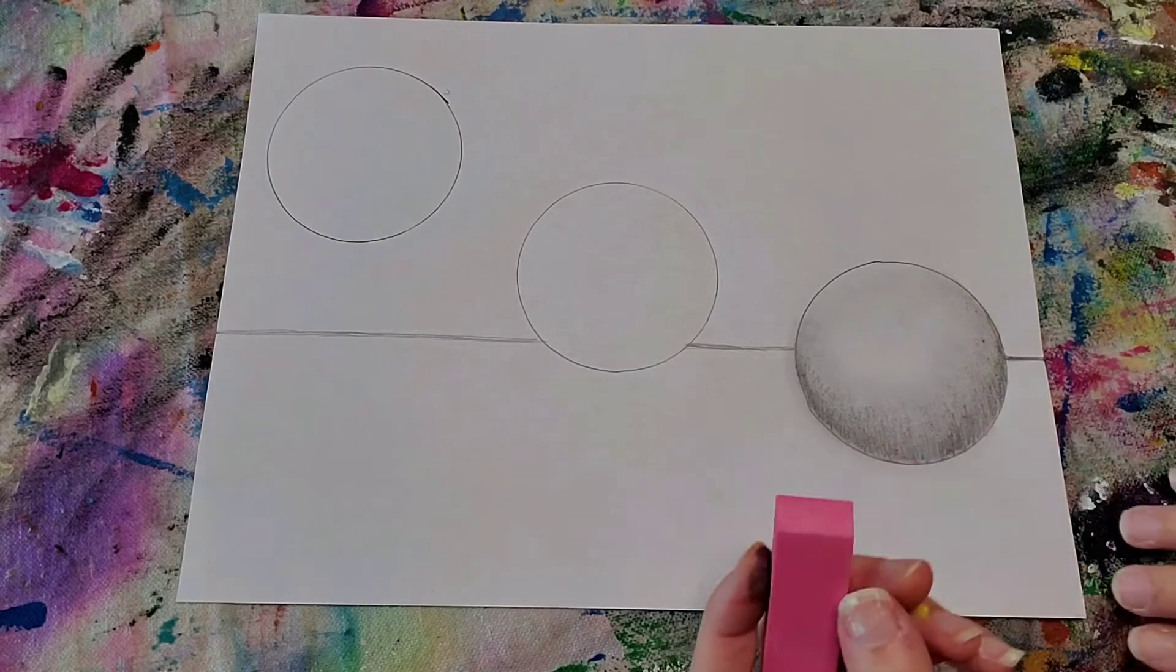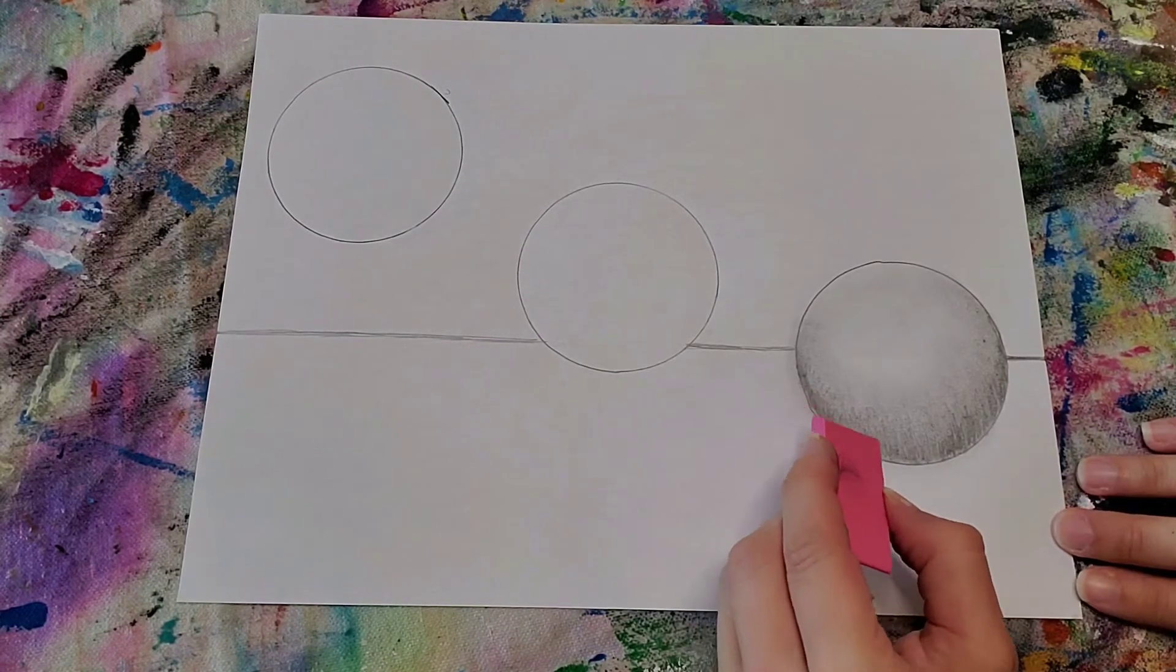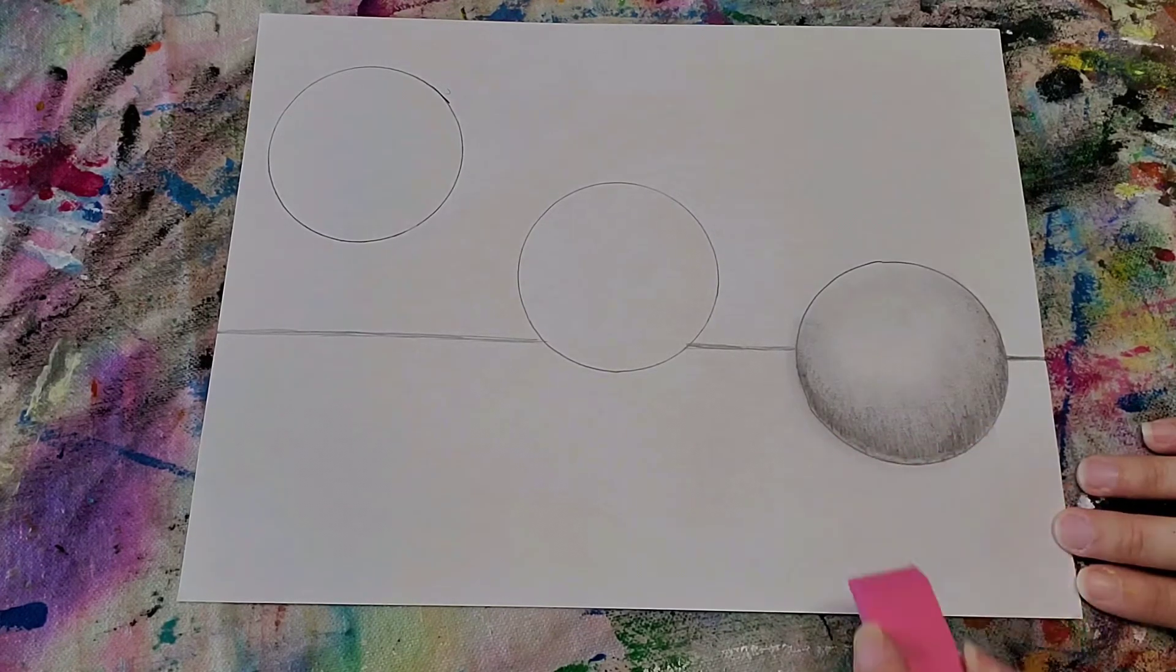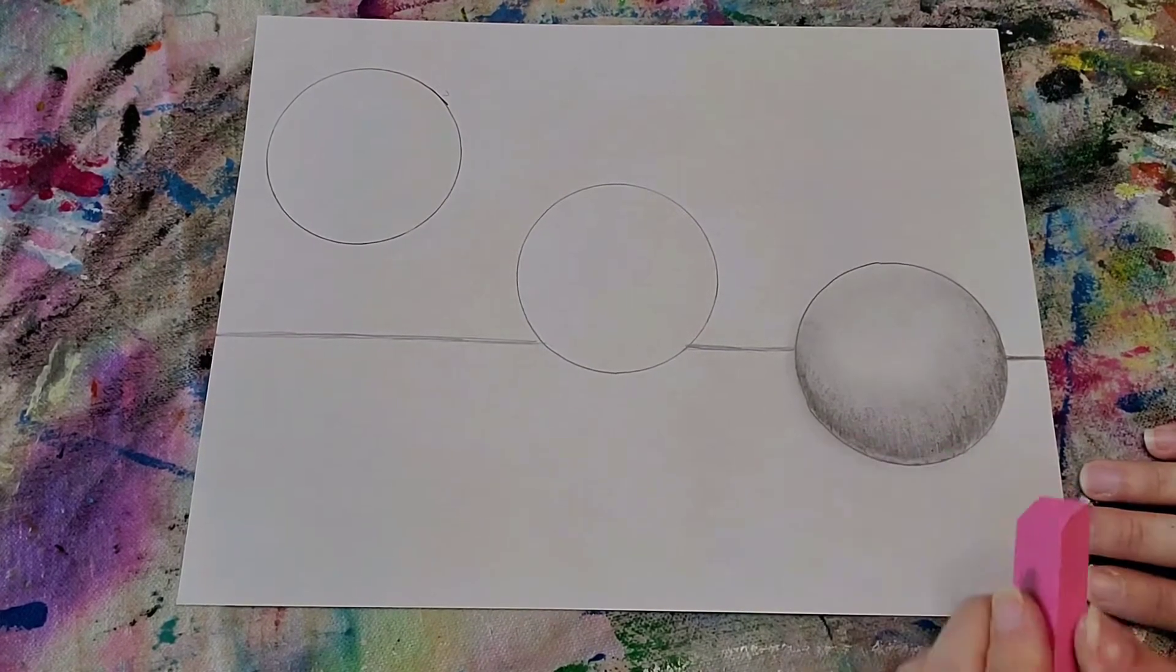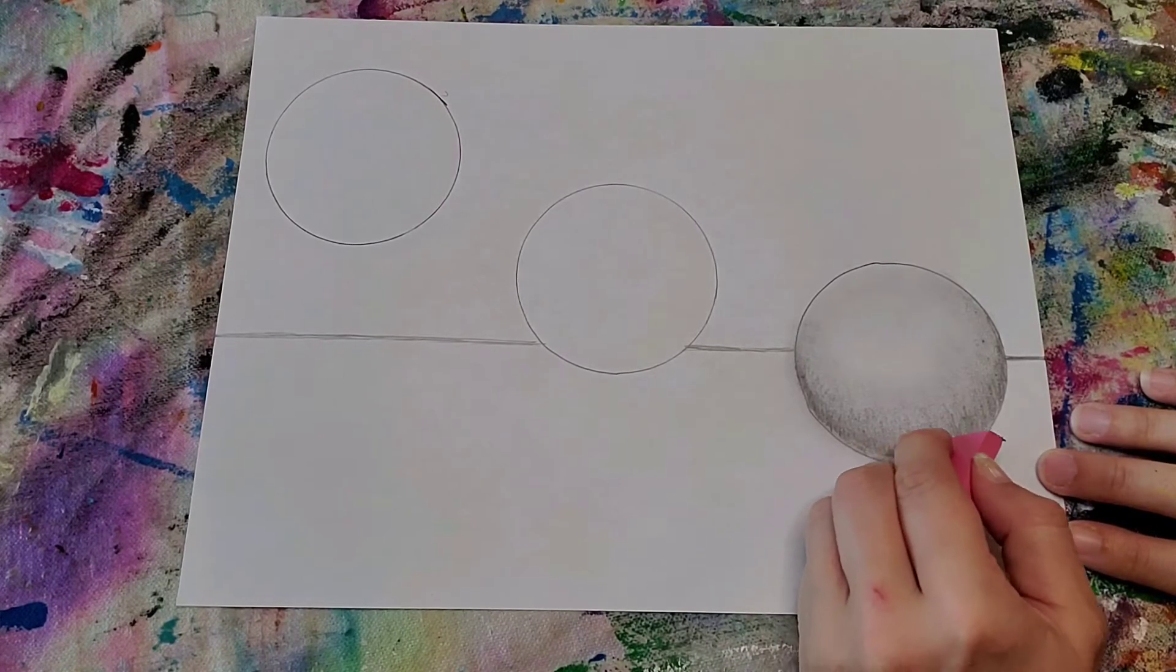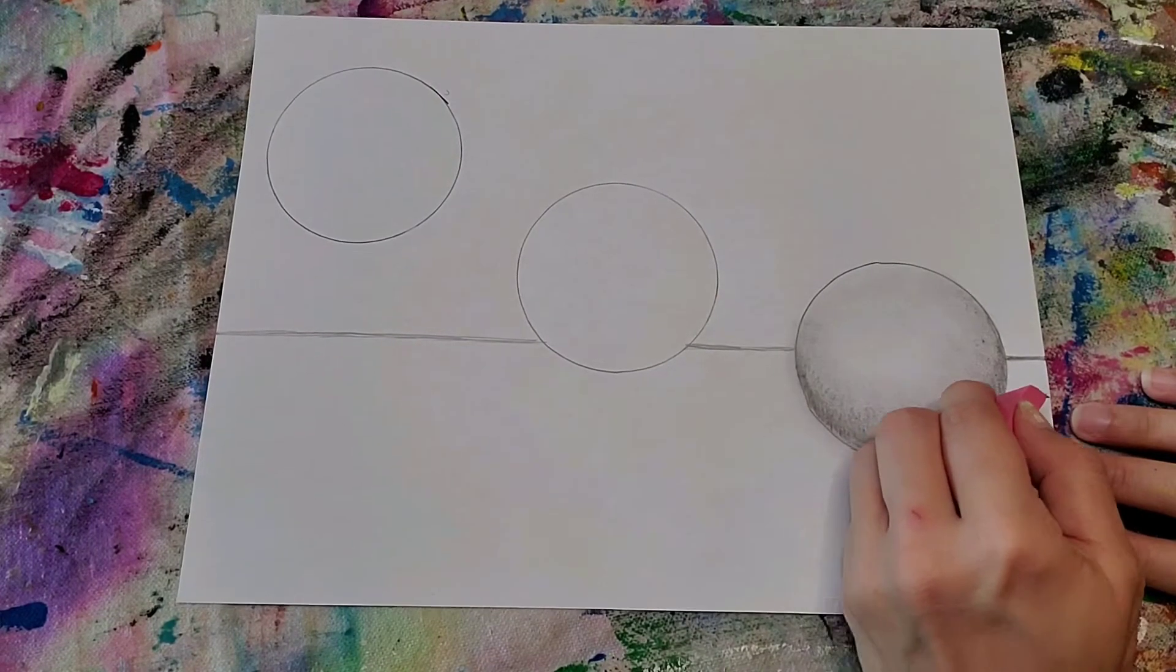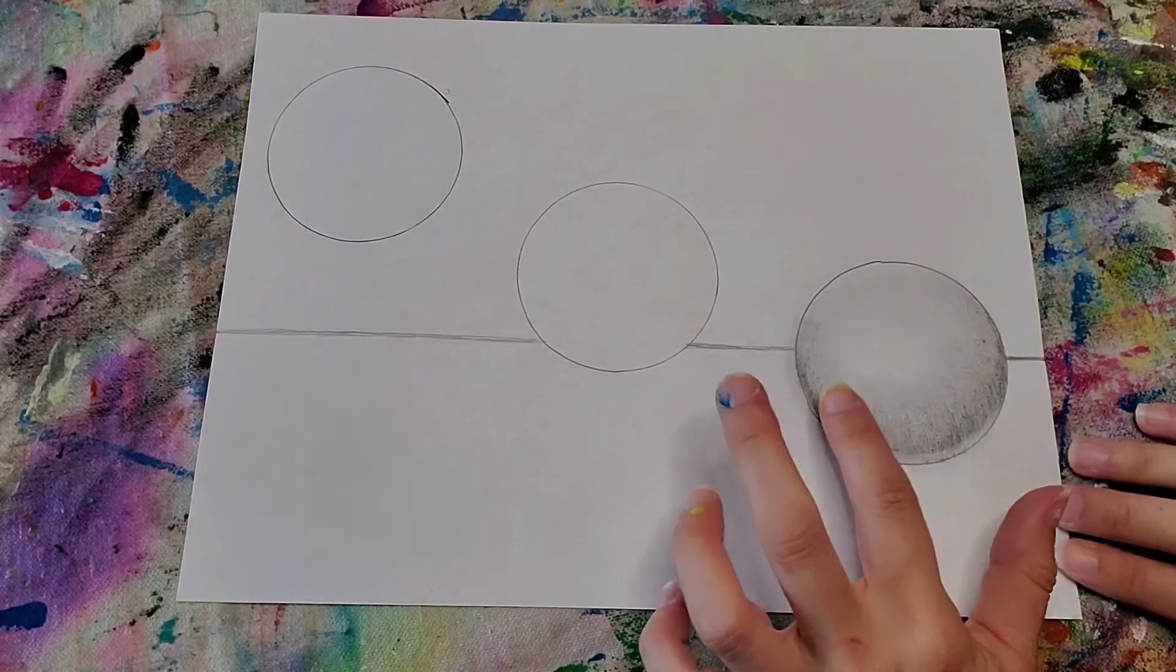Okay, so now I'm going to take my eraser and just before the line that we made for the circle originally, I'm going to lightly just erase above it because that is going to look like a reflection. Not pushing hard at all - you want to start with a little bit of erasing. Okay, so that's a reflection at the bottom.